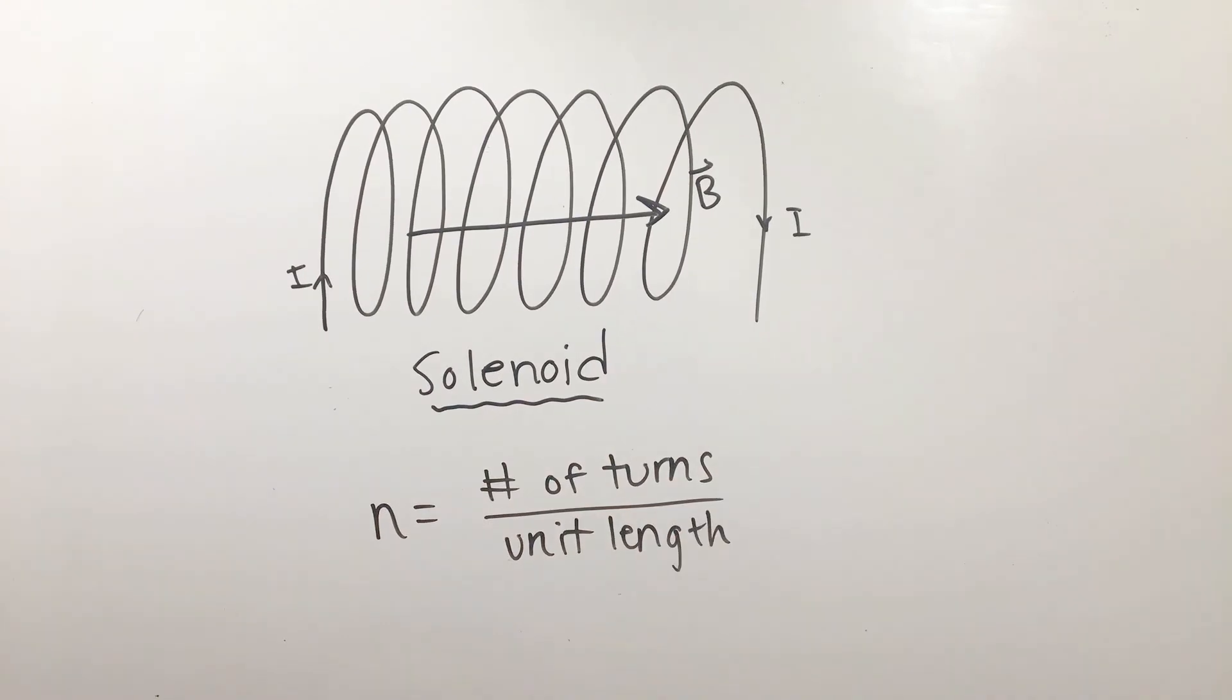To solve for the magnetic field inside of a solenoid, let's look at the solenoid with constant current I and a turn density, or number of coils per unit length, small n.